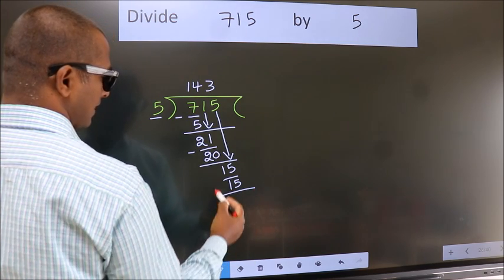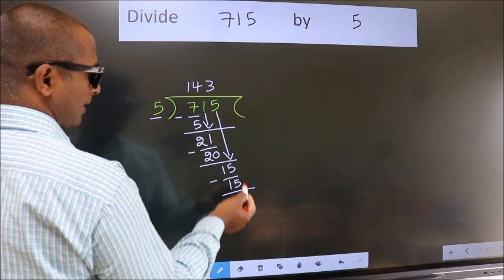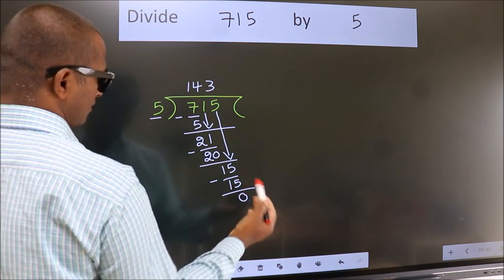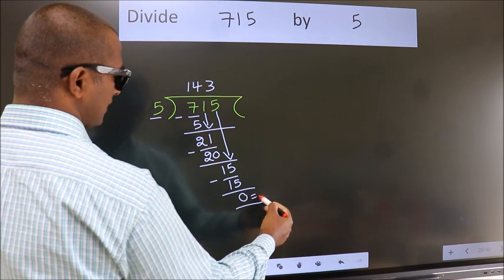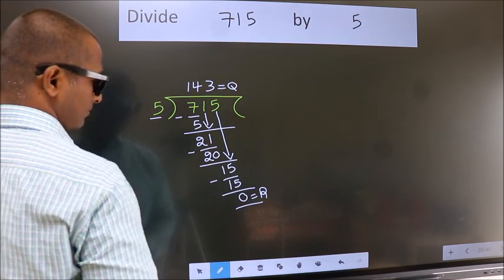Now, we subtract. We get 0. No more numbers to bring it down. So, we stop here. This is our remainder. This is our quotient.